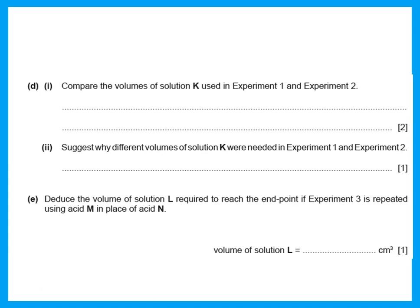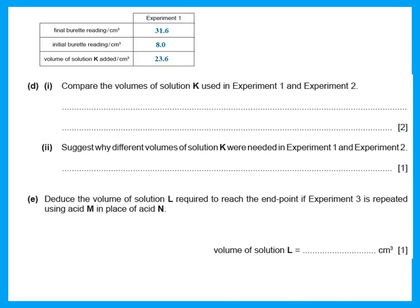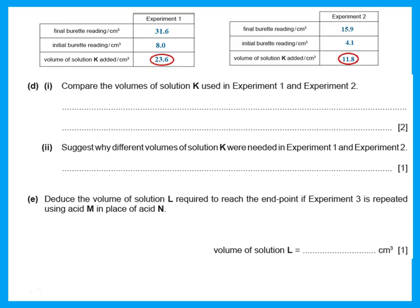Compare the volumes of solution K used in experiment one and experiment two. In experiment one, 23.6 cm³ was used; in experiment two, 11.8 cm³ was used. Do not just say one is more than the other — notice that the volume in experiment one is exactly twice the volume in experiment two.